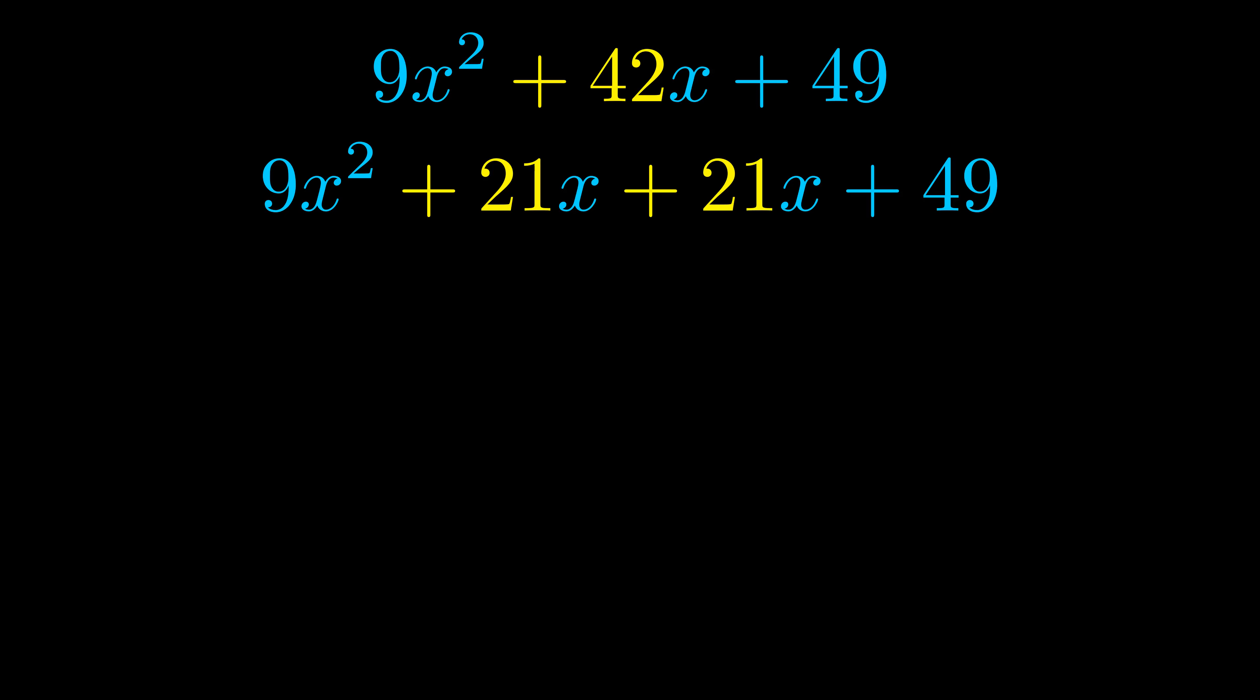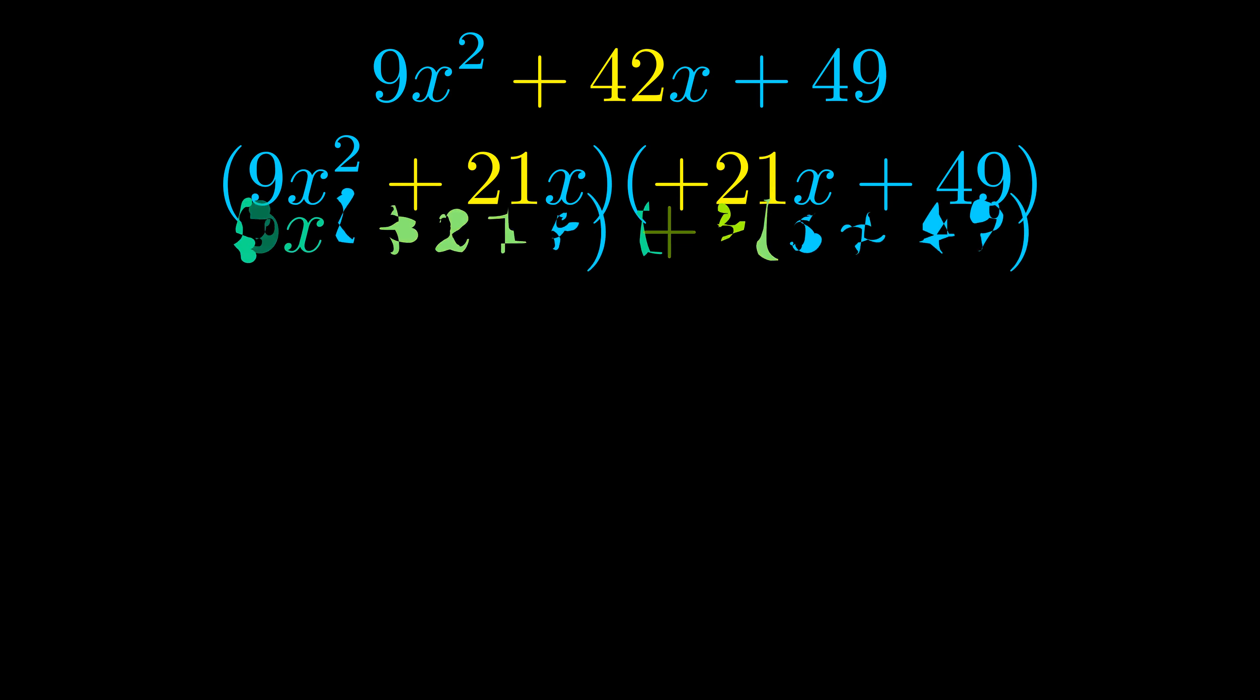Once we've done this we go ahead and we put parentheses around the first term and the last term and we do that so that we can take the greatest common factor out of both terms. We can see the greatest common factor is now outside in green. Notice also how what remains inside of the parentheses is the same in both cases. The blue values are the same.